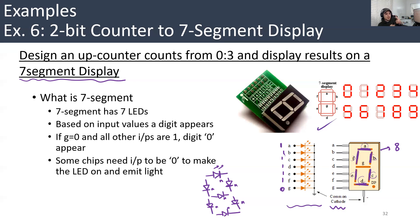So we have seven outputs. We are counting in binary — just two bits: 00, 01, 10, 11.